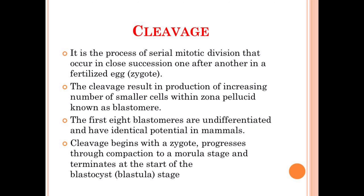The cleavage begins with a zygote, progresses through a compaction stage to a morula stage, and then terminates at the start of the blastula. The division of the zygote begins cleavage, which moves towards the morula stage. Morula is basically a solid ball of cells resulting from division of a zygote, which will develop into the blastocyst or blastula, where the process of cleavage terminates.